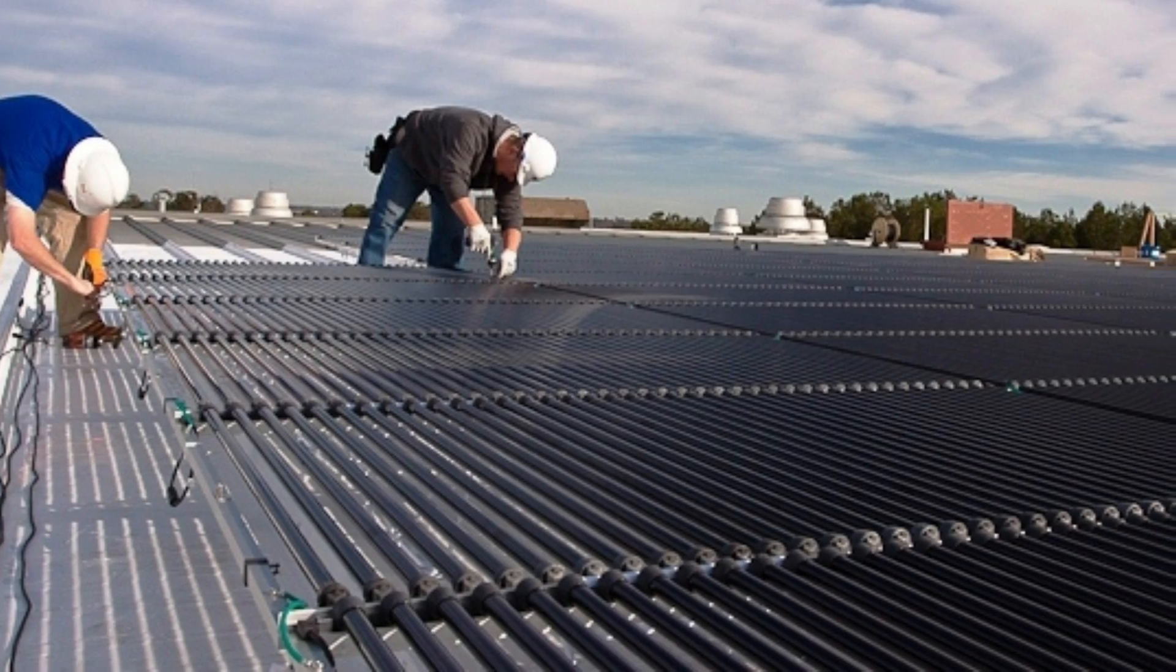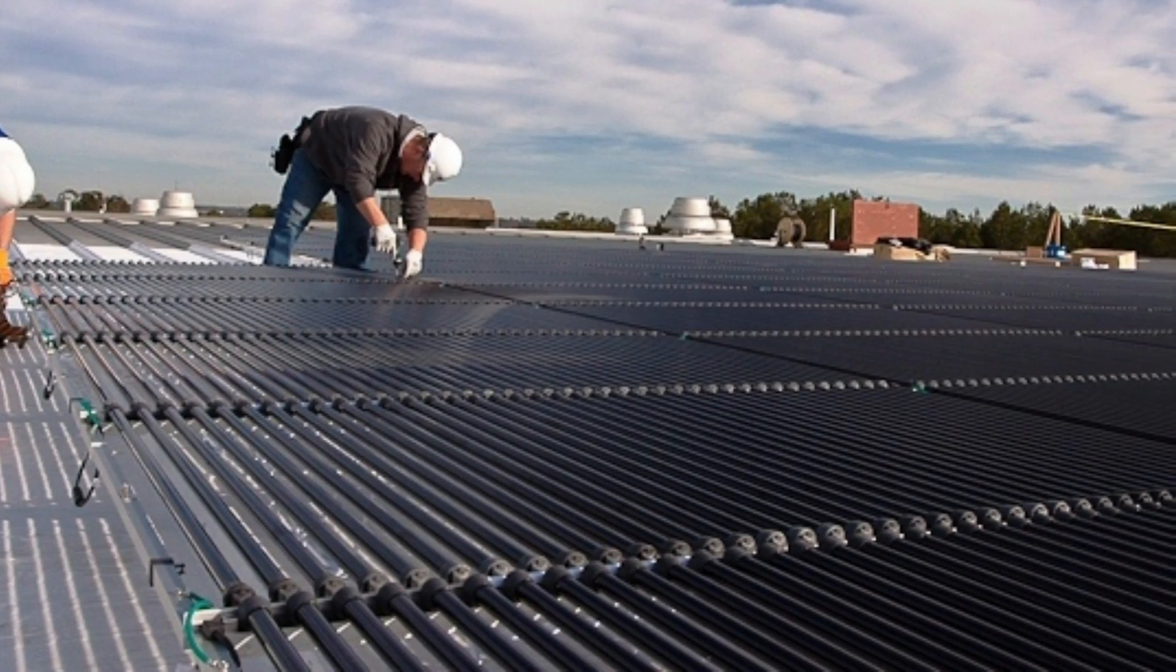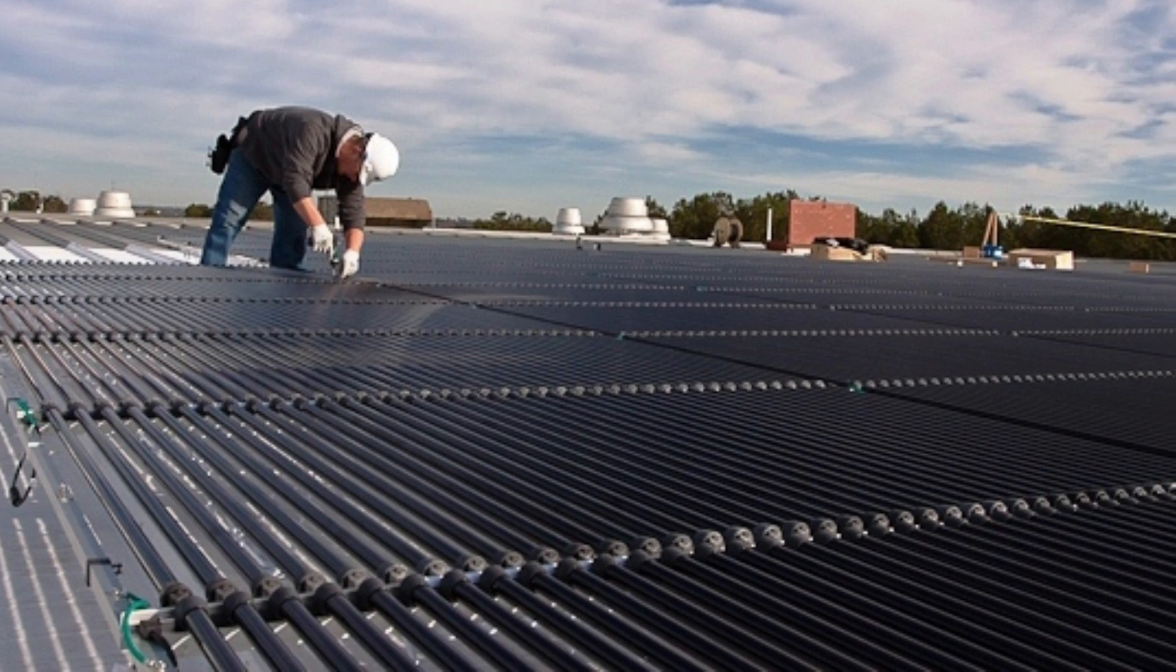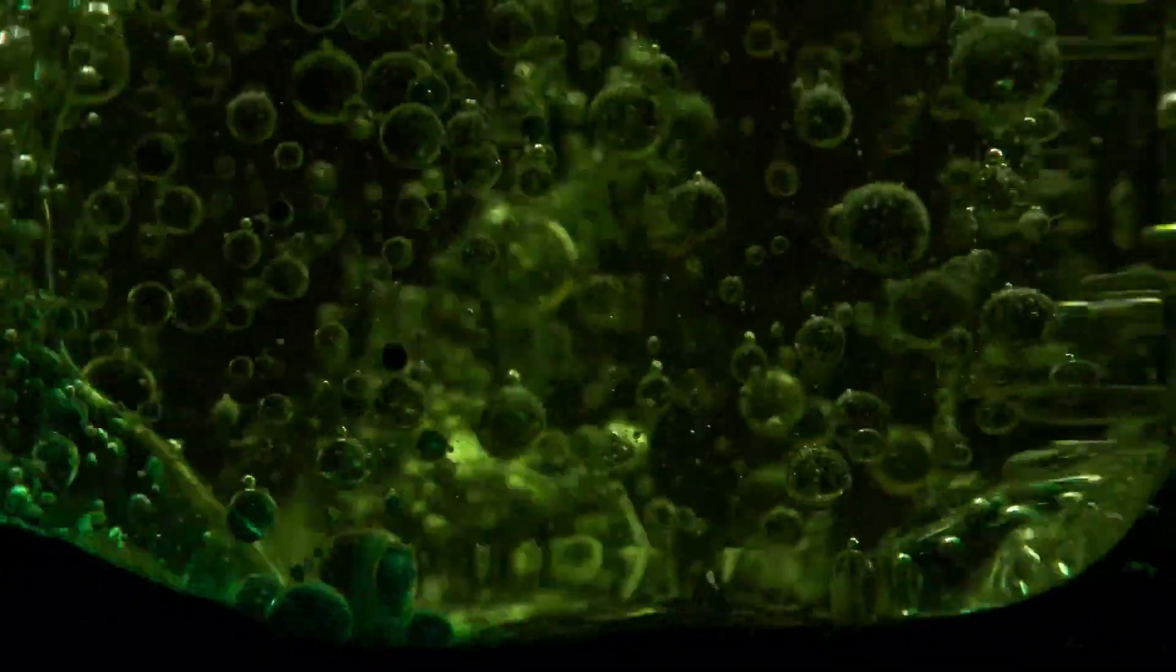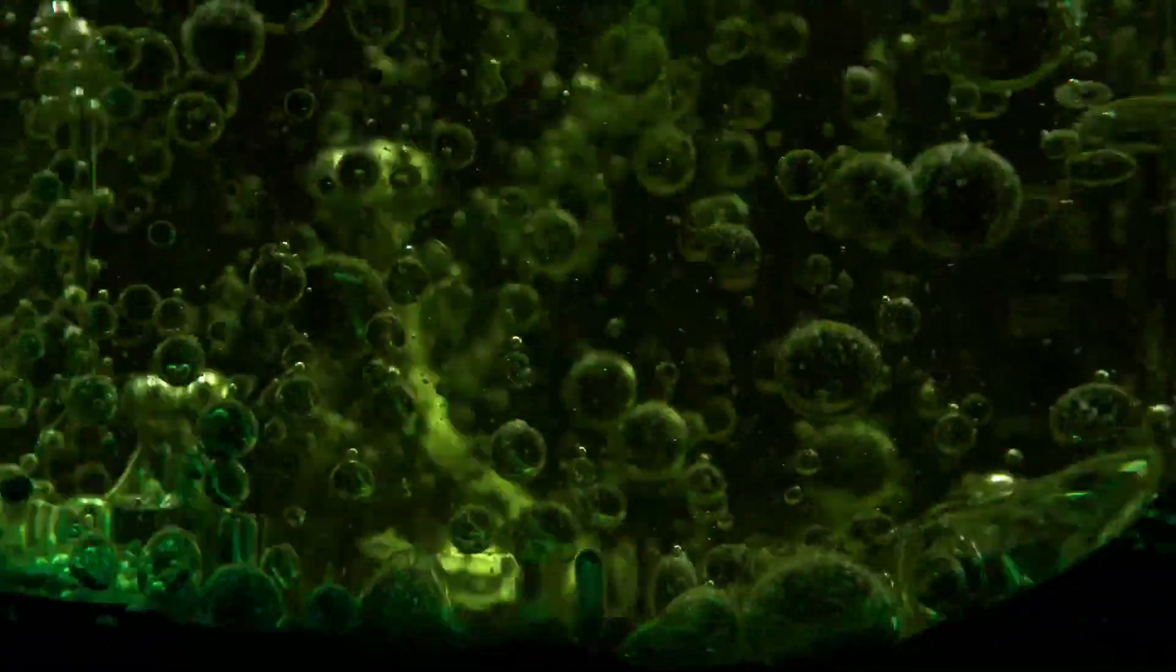Solyndra, for instance, was built on a foundation of unique tubular solar panels that set it apart from its competitors. But the company had yet another ace up its sleeve. It didn't rely on polysilicon, the material that was causing a shortage for many of its peers.